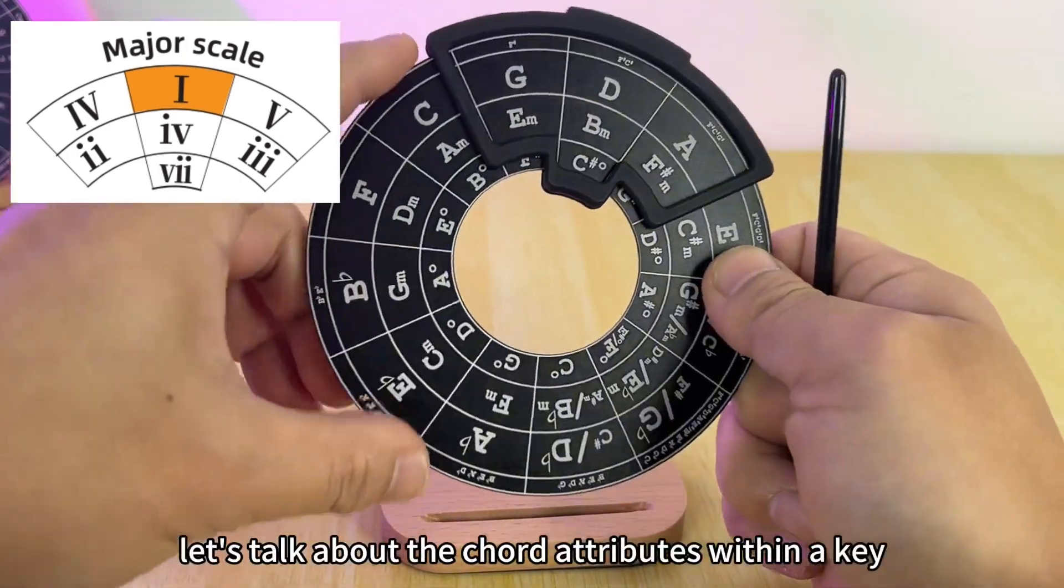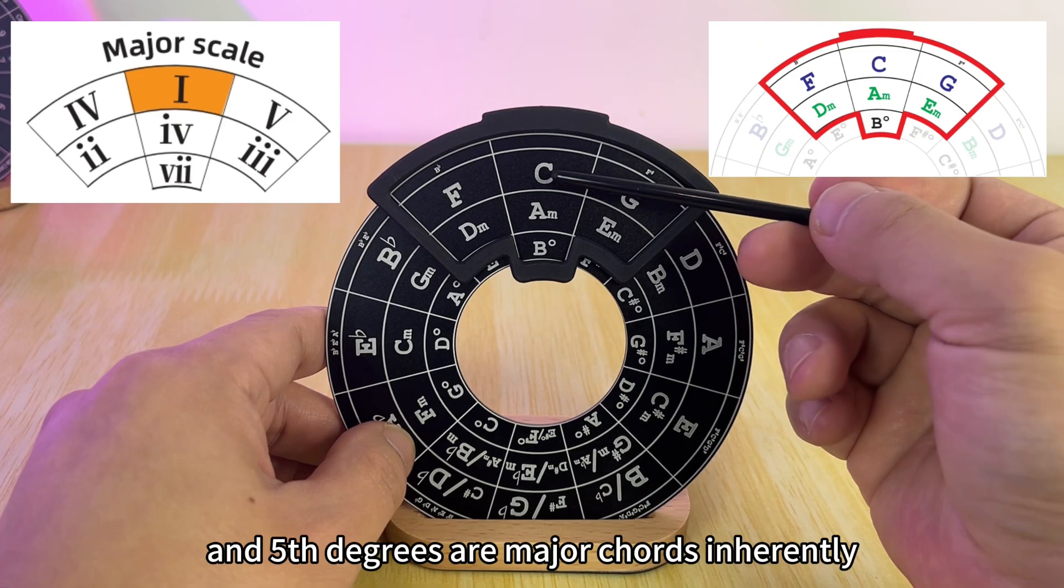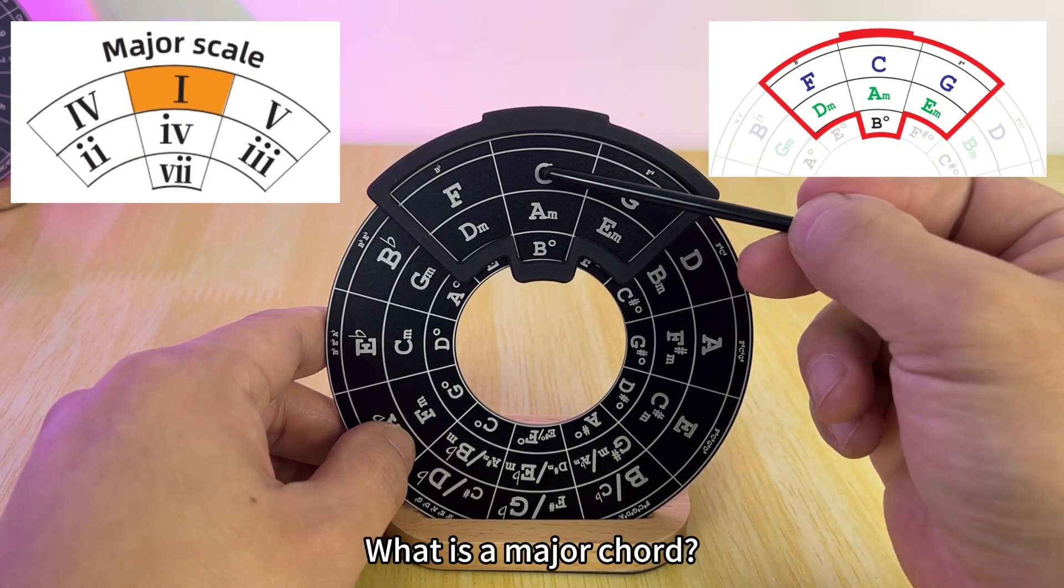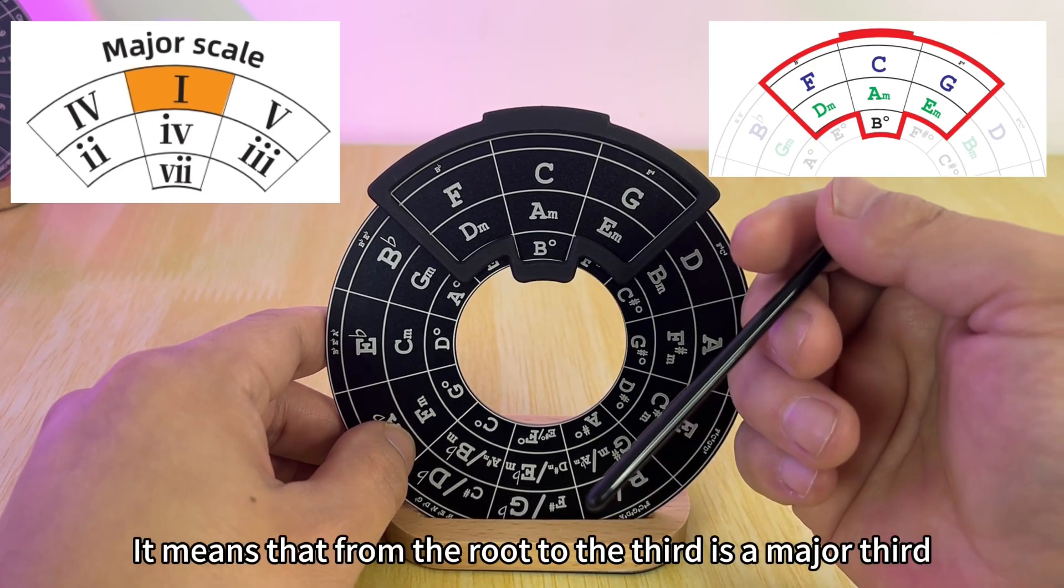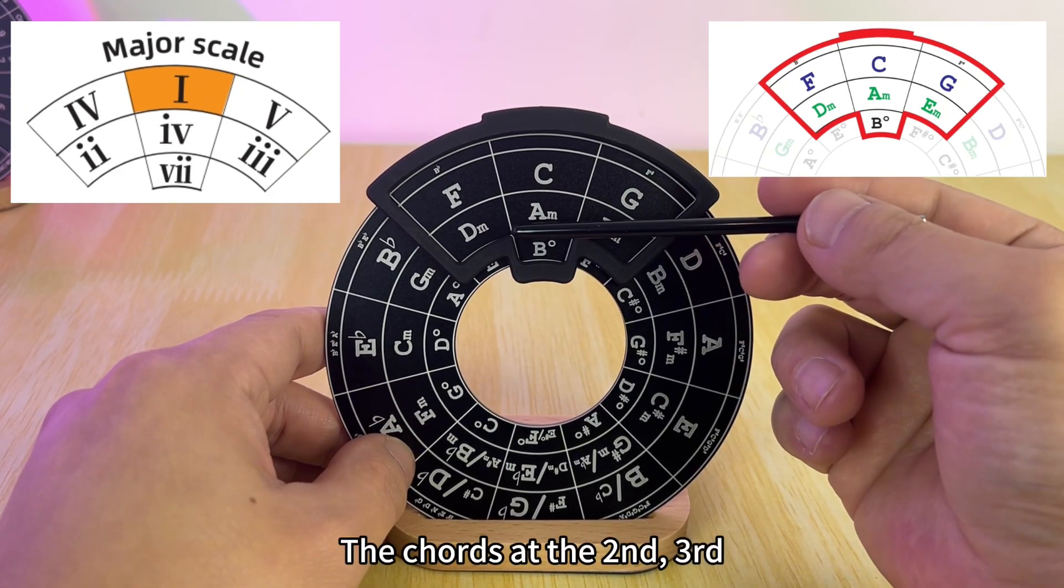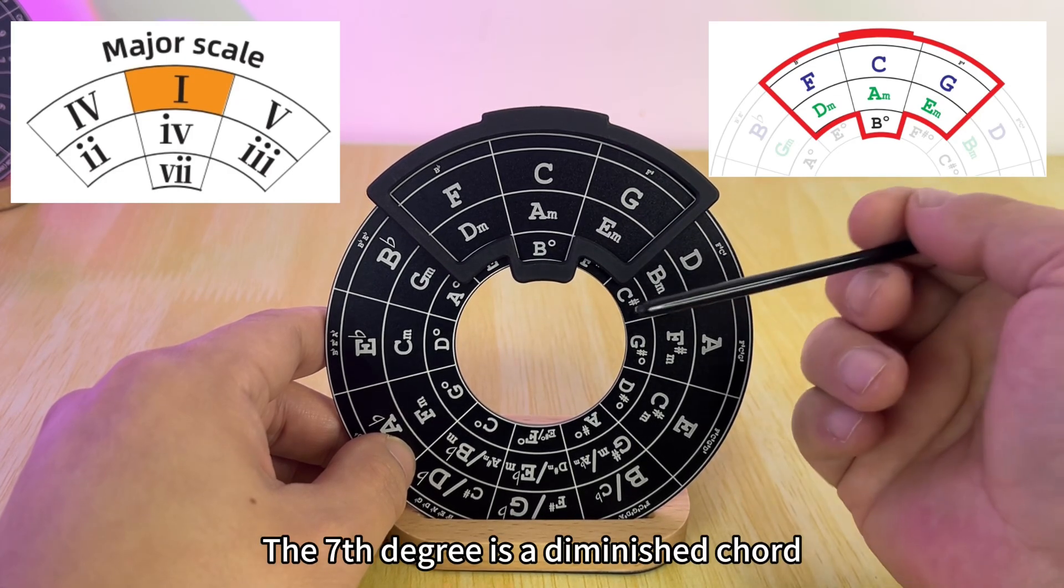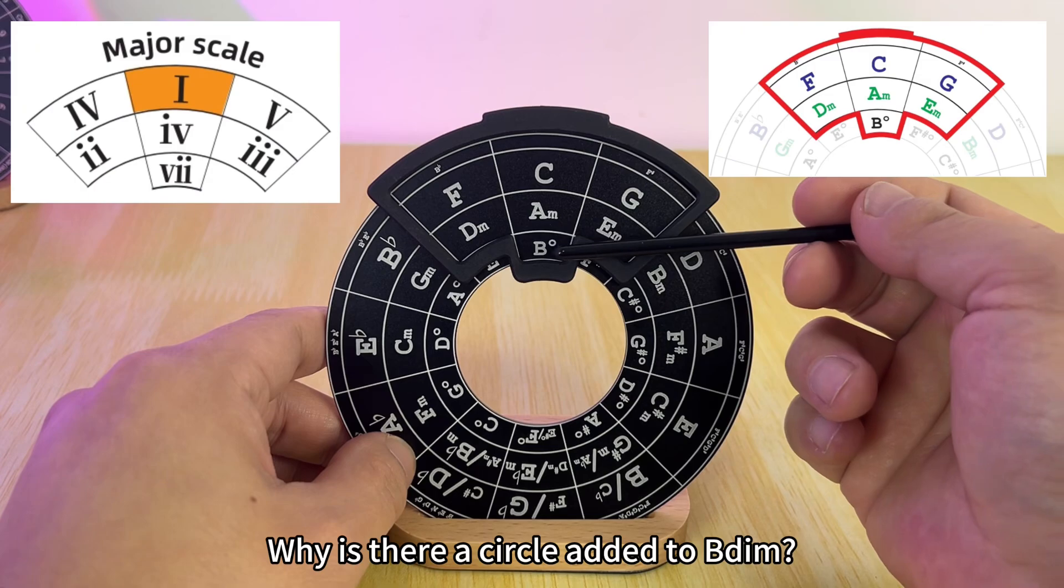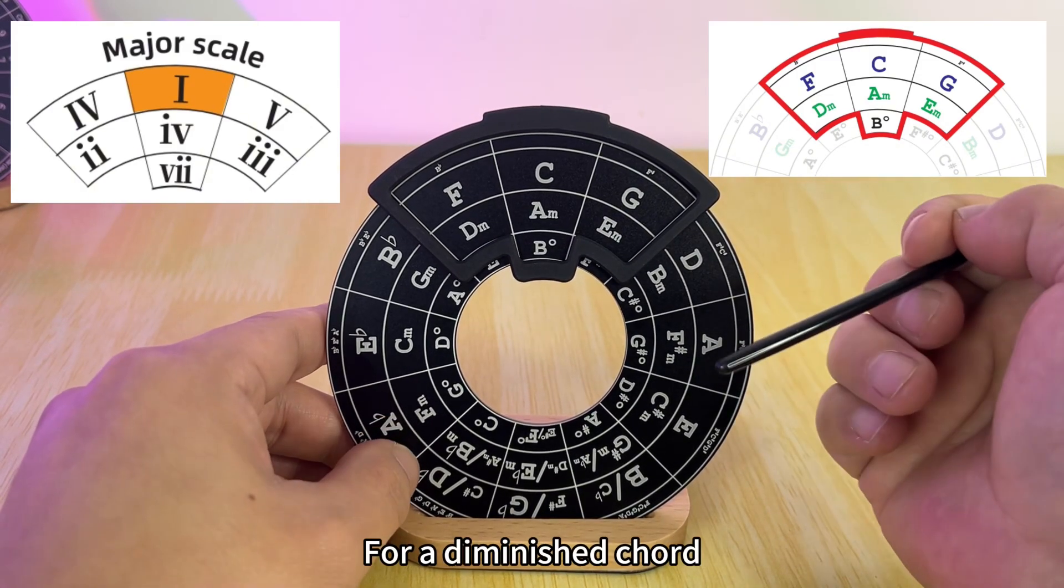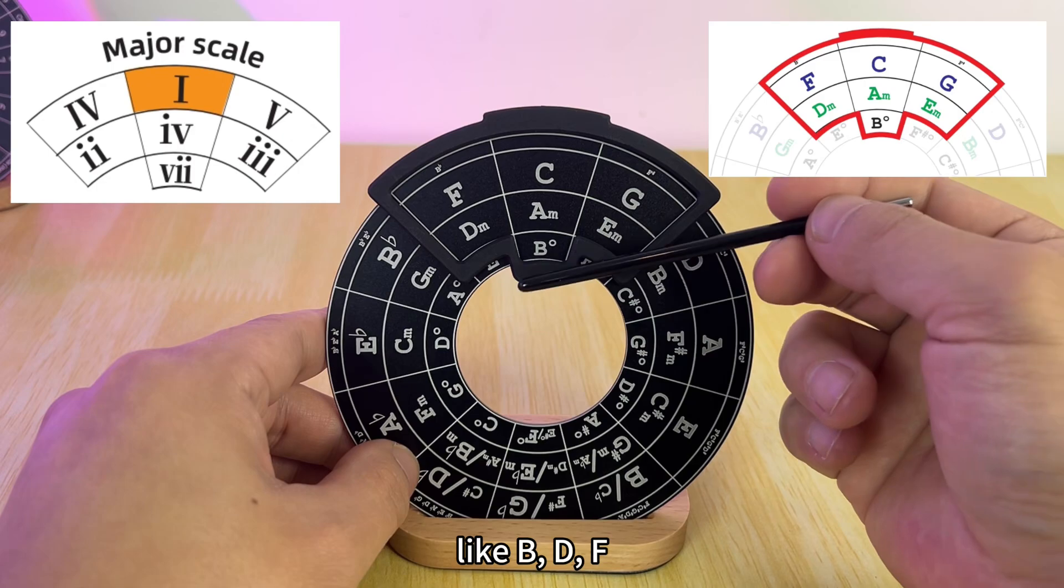Now let's talk about the chord attributes within a key. Due to the nature of the natural major scale, the first, fourth, and fifth degrees are major chords inherently, so a major chord is represented by just one letter. What is a major chord? It means that from the root to the third is a major third and from the third to the fifth is a minor third. The chords at the second, third, and sixth degrees are minor chords. This is the case for all natural major scales. The seventh degree is a diminished chord. For a diminished chord, from the root to the third is a minor third and from the third to the fifth is also a minor third, like B, D, F.